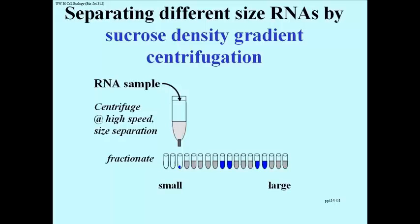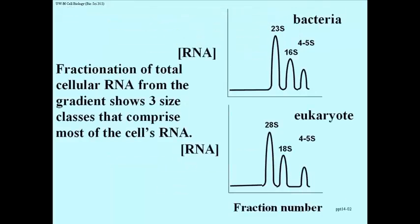So now we can take the information about how much RNA is in each tube and plot this on a graph. And what you see here is the plot of a fractionation of total cellular RNA. The top one is bacteria and the bottom one is eukaryotic RNA. And what you see if you measure the amount of RNA in every tube is that there are three different size classes of RNA in bacteria and eukaryotes.